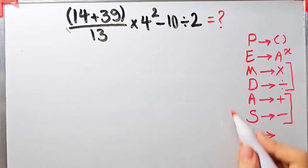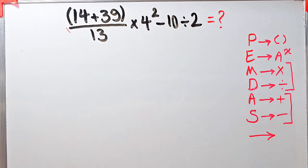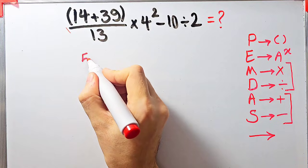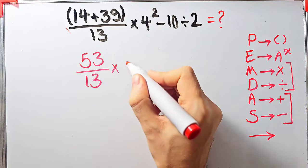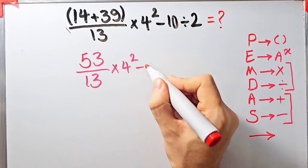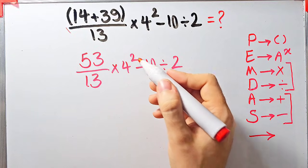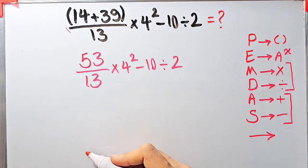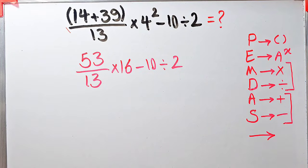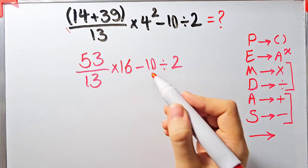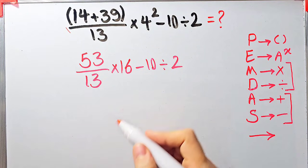According to the PEMDAS rule, first we simplify the parenthesis. Inside the parenthesis we have 14 + 39, which equals 53. Now we have 53 over 13, times 4 to the power of 2, minus 10 divided by 2. In this step we have multiplication, exponents, subtraction, and division. First we simplify the exponent: 4 to the power of 2 equals 16. So now we have 53 over 13, times 16, minus 10 divided by 2.